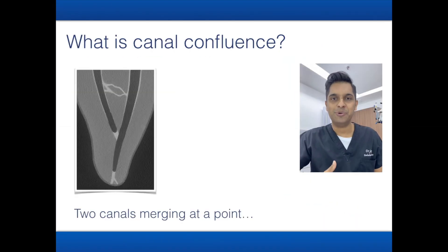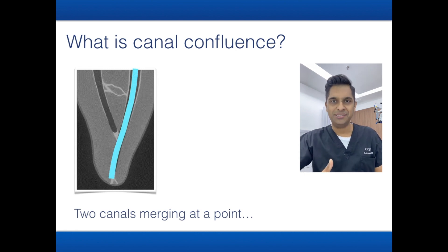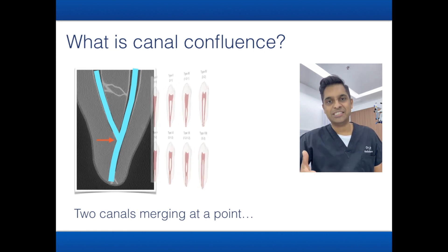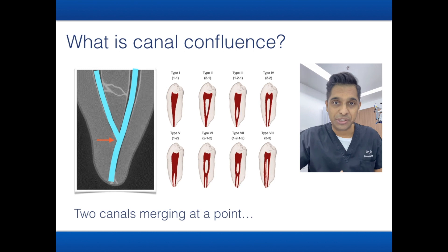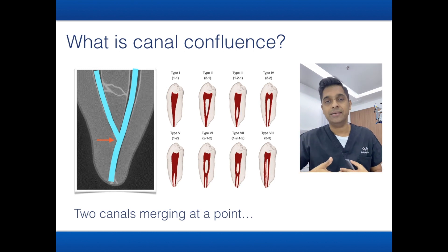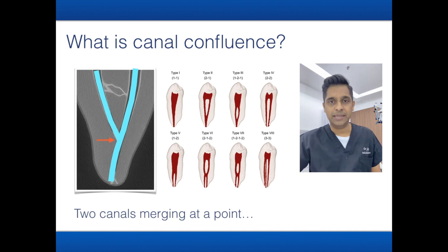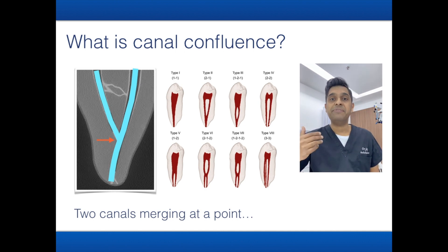What is a confluent canal? When two canals merge at a point, that canal is called a confluent canal. Wayne's classification for root canal anatomy clearly states that type 2 and type 3 canals are canals which merge and exit as a single canal. These are confluent canals, and they are quite common in posterior teeth — maxillary and mandibular — and even anterior teeth like lower incisors, which can have two-canal confluent canals.